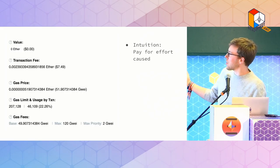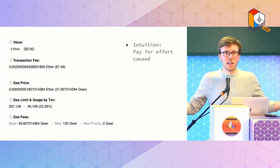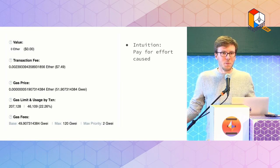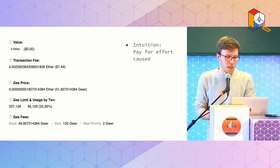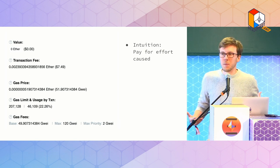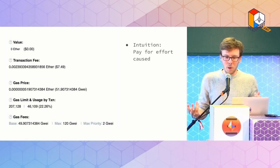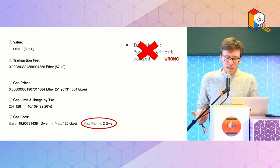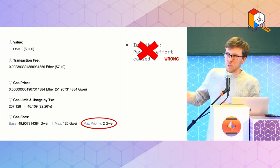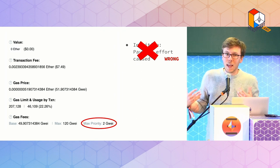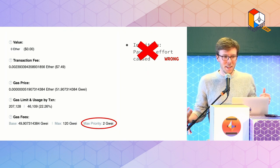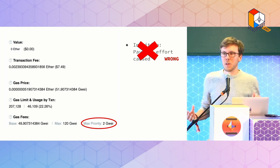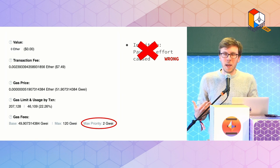I wanted to start with a bit of motivation. This is a screenshot of a transaction from today on Etherscan. As you're probably aware, if you've ever sent a transaction on Ethereum, you pay for the transaction — there's the gas price, the gas limit, and so on. A common intuition is that what you pay for is the effort you cause to nodes and the miner. But in a sense, this intuition isn't quite correct. If you look at the transaction, you have this new field, the priority fee, and that is actually only the part that pays for the inconvenience to the miner. The vast majority of the transaction fee does not actually reimburse the miner — it does something else.